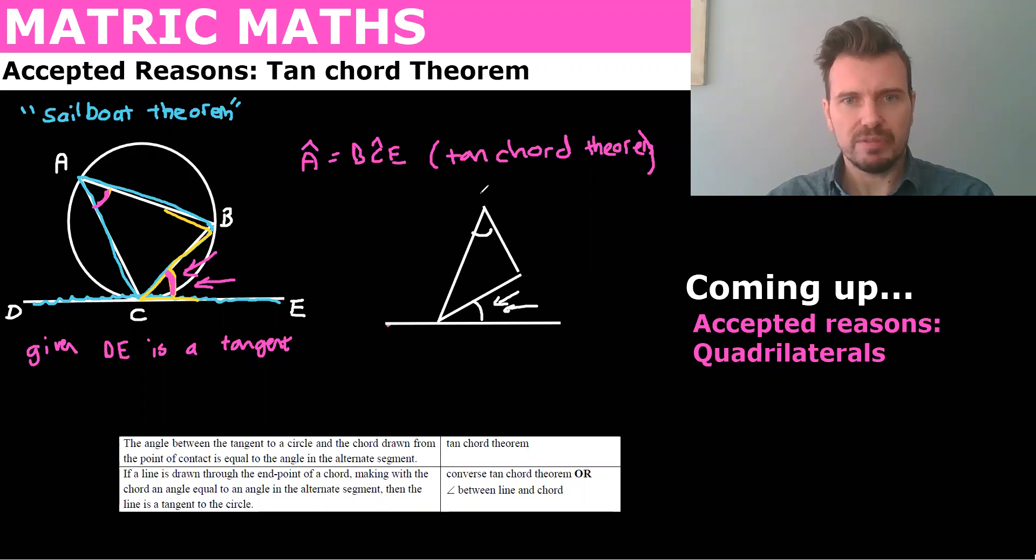So if we're given maybe that A is equal to, let's make this B, C, E. So if we're given this, we could therefore say that ACB is cyclic.